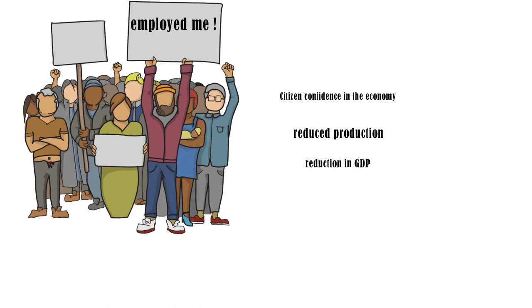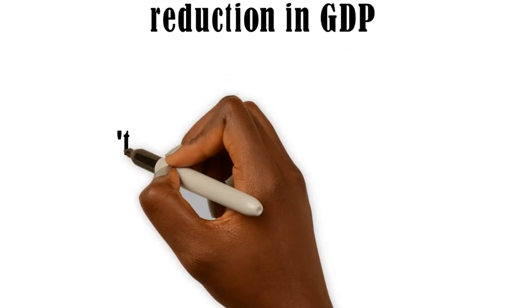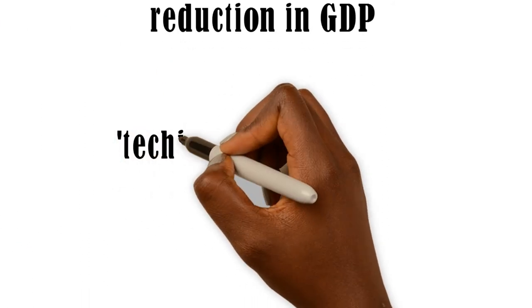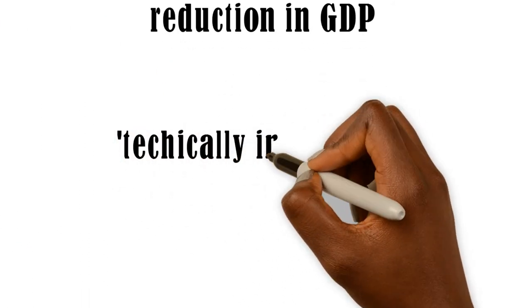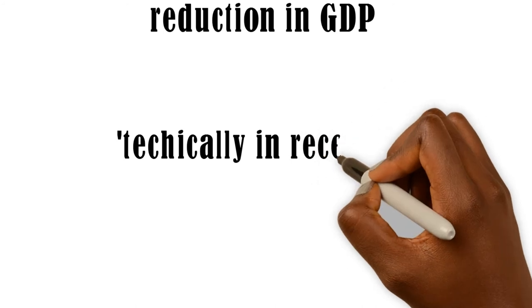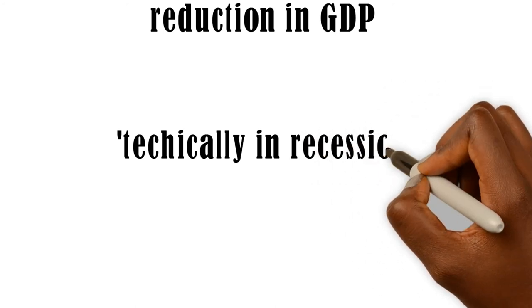Recession can be a normal business cycle, and in that case the economy can come out of it over time. However, if the economy stays in that recession for two consecutive quarters, it is termed that the economy is in a recession.